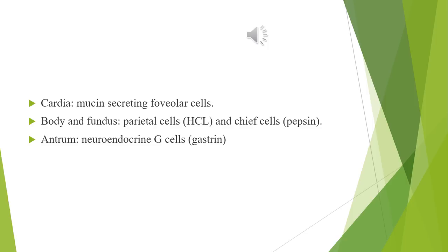In the body and fundus, the mucosa is thicker than the cardia. The parietal cells are prominent here, having an abundant pink eosinophilic granular cytoplasm, and they are responsible for acid production. We also have the chief cells, with abundant bluish cytoplasm, responsible for pepsin production. In the antrum, there are antral glands and neuroendocrine G cells scattered throughout the crypts, which produce gastrin.